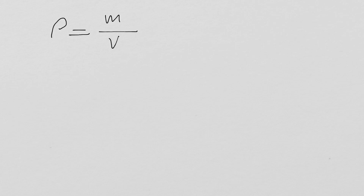The next step is to convert this volumetric flow rate into the mass flow rate. The relationship between mass and volume is determined by density. Density (rho) is mass divided by volume, and we can use the same expression for flow rates: density equals mass flow rate divided by volumetric flow rate.